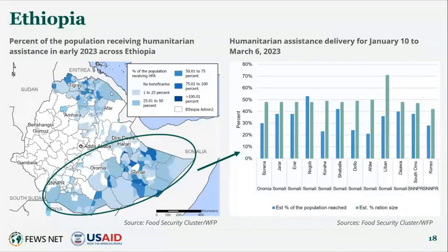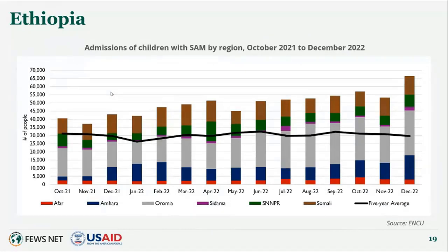Humanitarian food assistance is playing a significant role in mitigating the severity of acute food insecurity. In the Somali region, about 2.5 million people — around 40% of the regional population — were reached with assistance in early 2023. In Barena zone, there has been a scale-up of assistance since late 2022 when J-OPs took over distributions, with assistance reaching about 50% of the population's kilocalorie needs. Despite this, high levels of acute food insecurity are contributing to high levels of acute malnutrition, with available data pointing to critical or extremely critical levels of acute malnutrition in some areas of highest concern, and an increase in admissions of children with severe acute malnutrition for treatment.